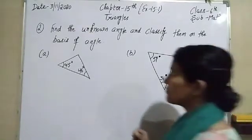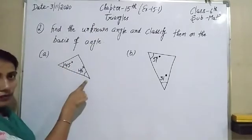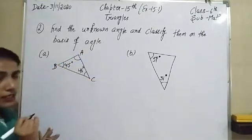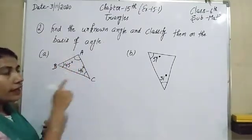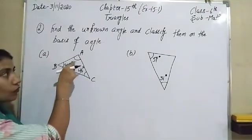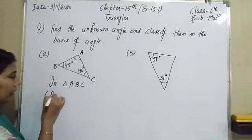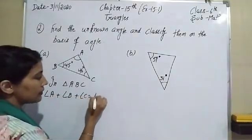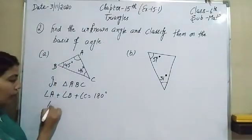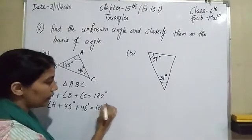The next question of this worksheet is: find the unknown angle and classify the triangle on the basis of the angle. Here are two triangles. In part A, a triangle is given and two angles are given; we have to identify the third angle. Let us suppose the angles are A, B, and C. Everyone knows that the sum of angles of a triangle is 180 degrees. In triangle ABC: angle A plus angle B plus angle C equals 180 degrees. Angle B is 45 degrees and angle C is 46 degrees.